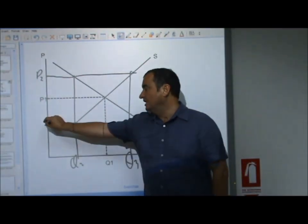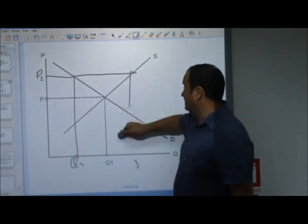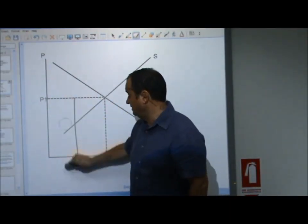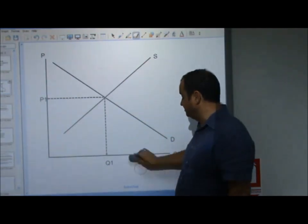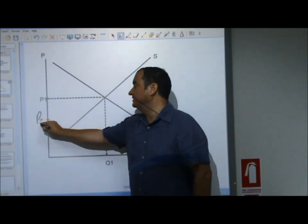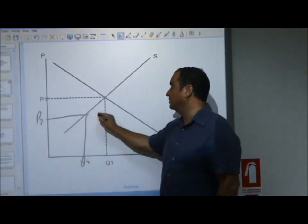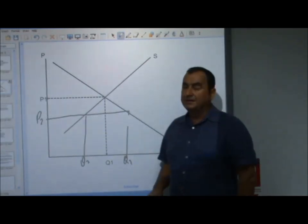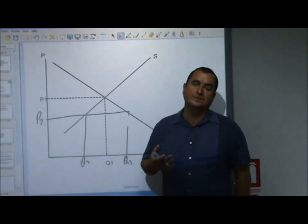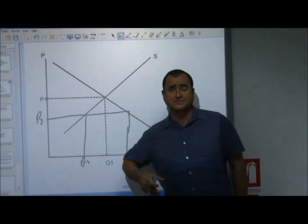If the price had been too low, we would have had a situation where there is excess demand. If the price being here, P2, you can see that the quantity supplied is only this much, but the quantity demand is greater. Excess demand. There is more demand than supply in amount Q2, Q3 of excess demand, and this will cause the price to be driven up.